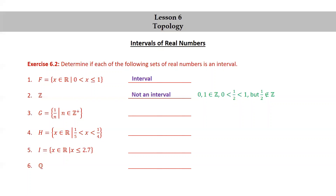G equals the set {1/n : n is a positive integer}. This is not an interval — for example, 1/2 and 1 are in G, and 3/4 is between 1/2 and 1, but 3/4 is not in G. H equals the set of real numbers x such that x is between 1/5 and 1/4 exclusive. This is an interval. I equals the set of real numbers x such that x ≤ 2.7, which is also an interval.